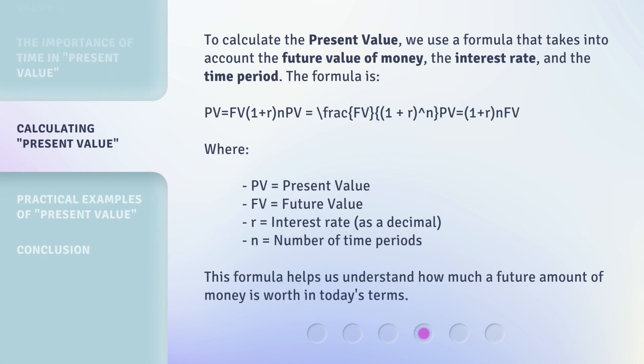To calculate the present value, we use a formula that takes into account the future value of money, the interest rate, and the time period. The formula is: PV = FV / (1 + R)^N. Where PV equals present value, FV equals future value, R equals interest rate as a decimal, and N equals number of time periods. This formula helps us understand how much a future amount of money is worth in today's terms.